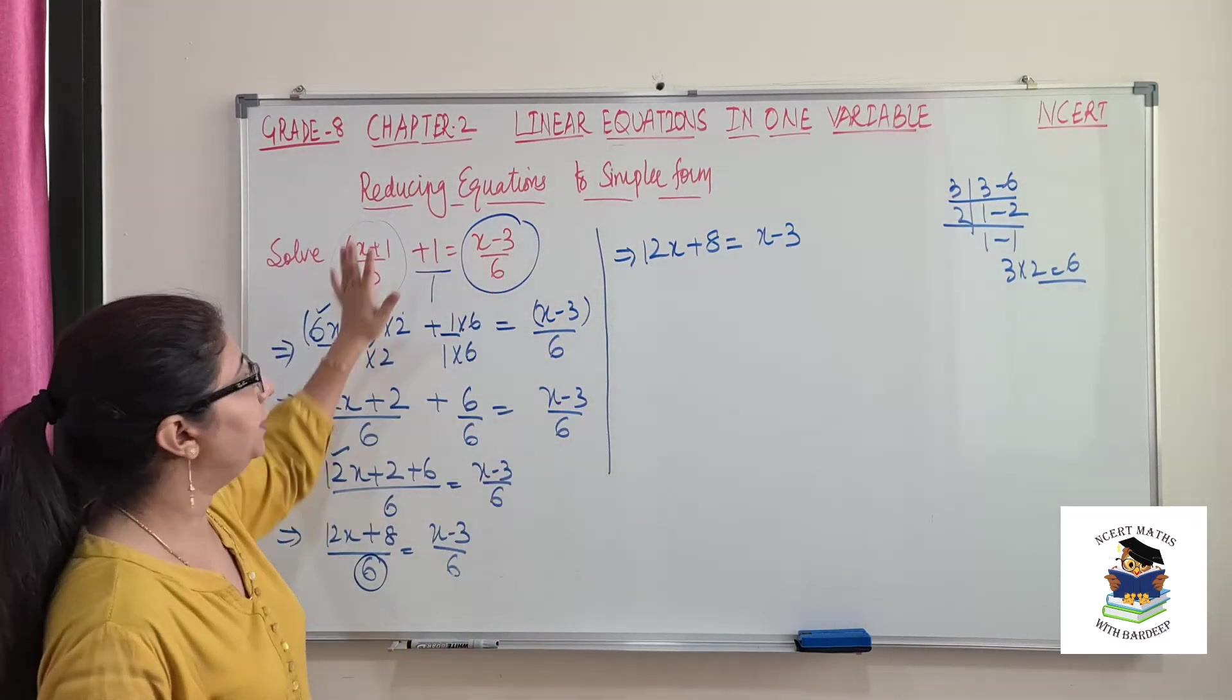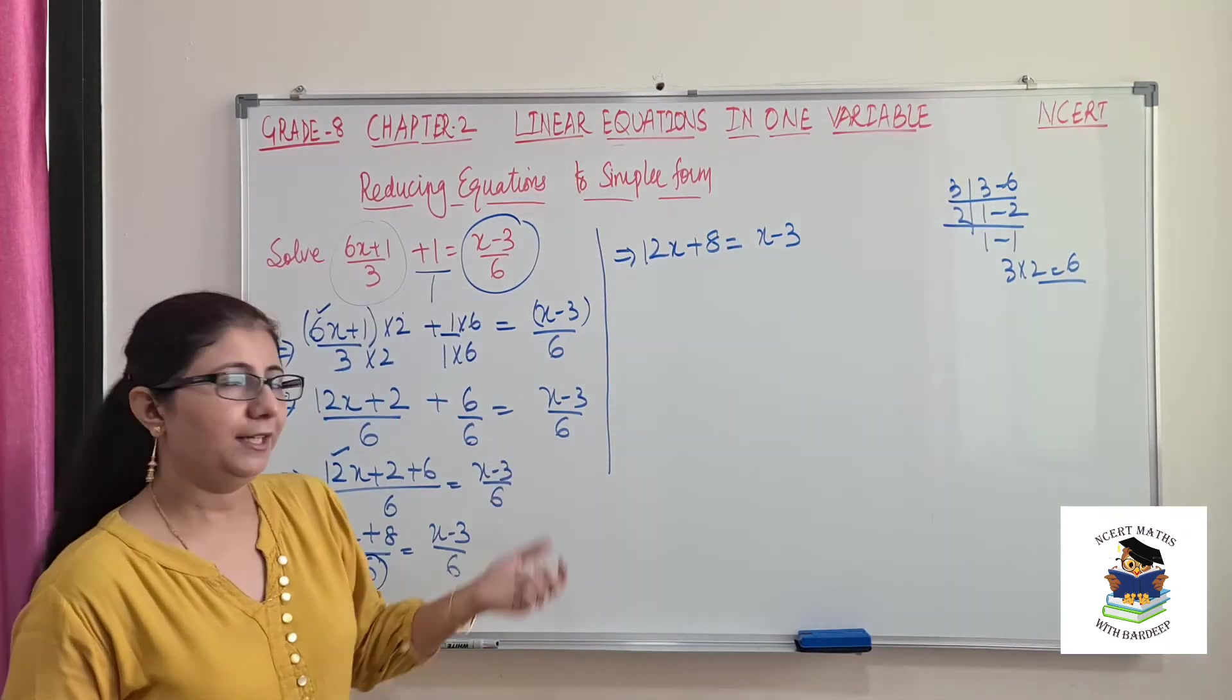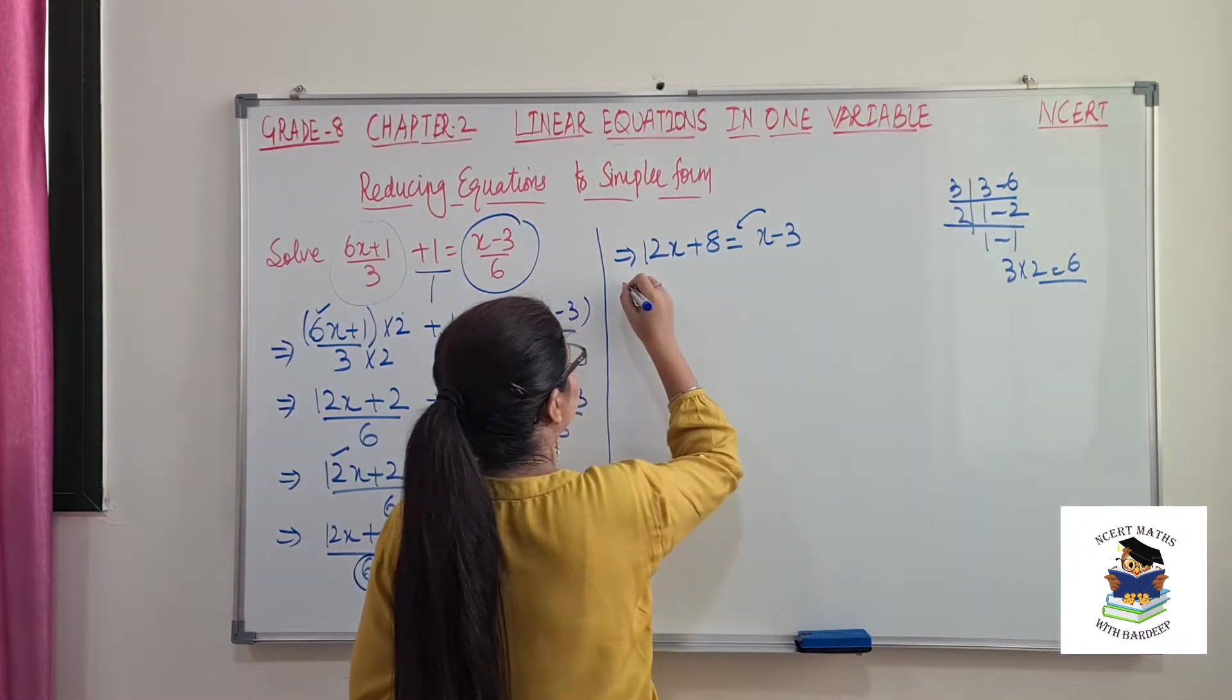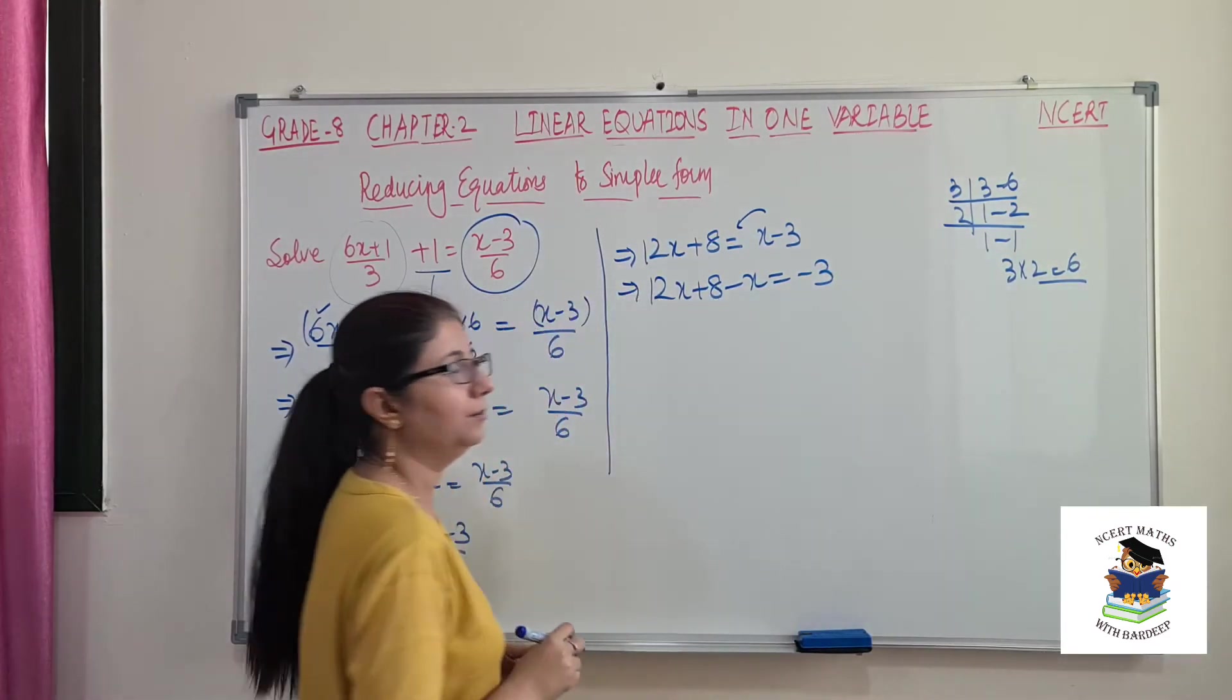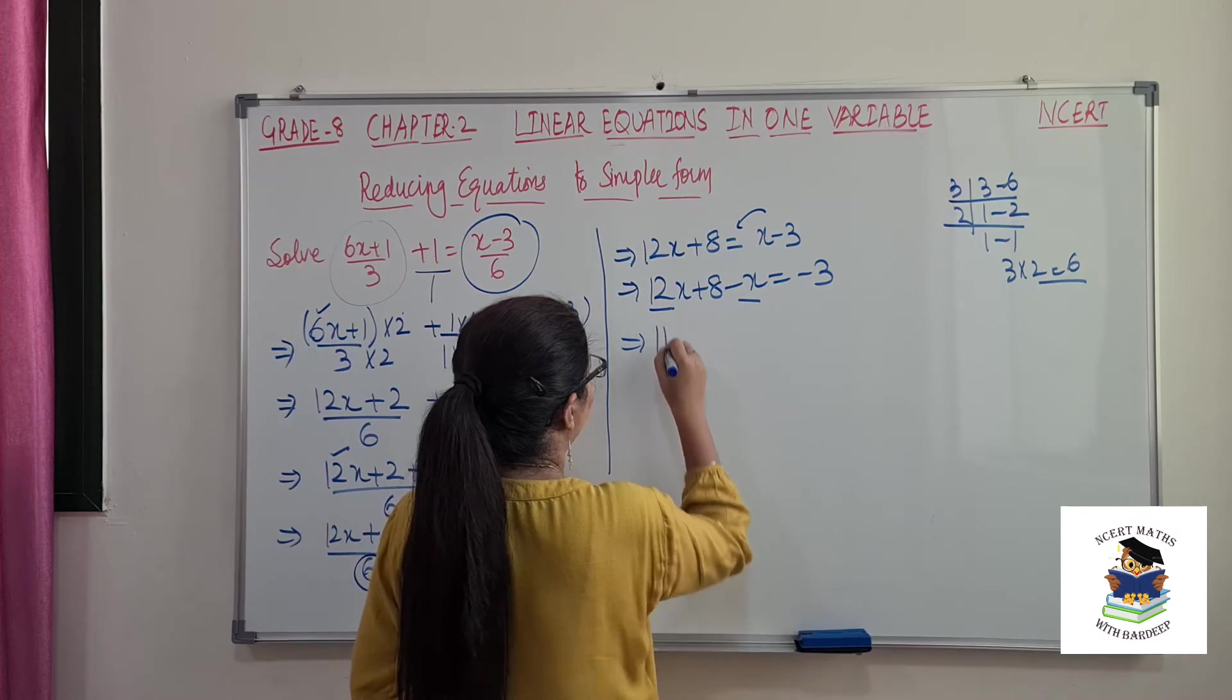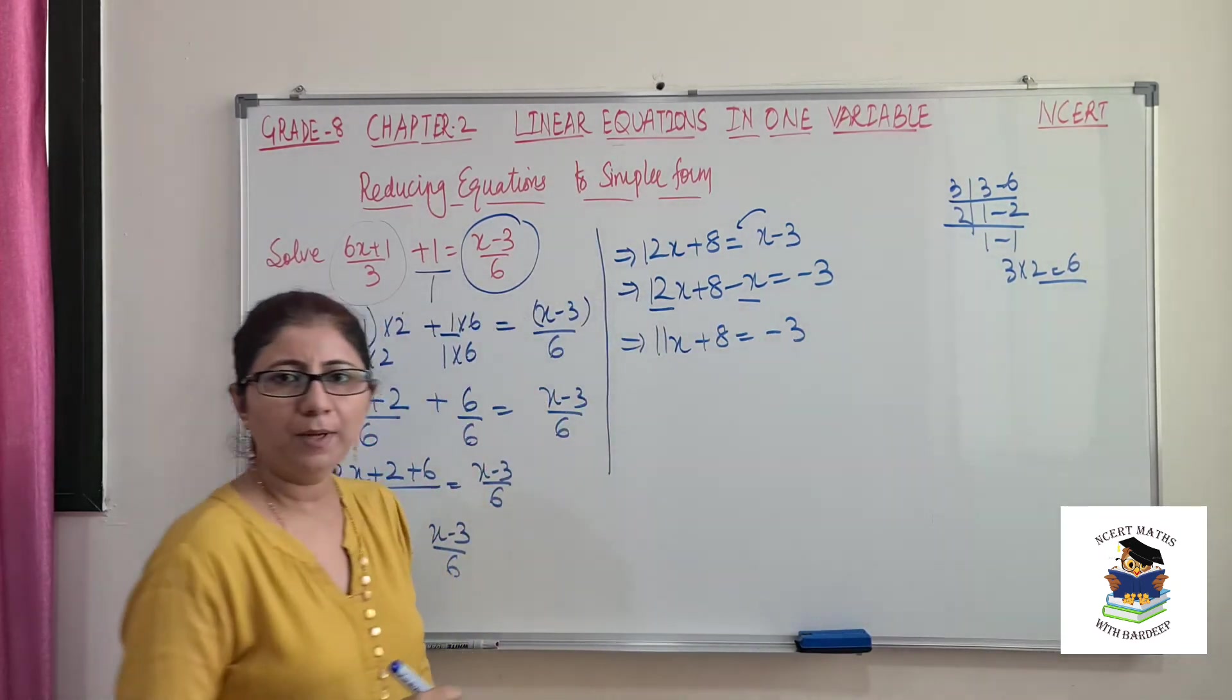So this is how we say reducing equations to simpler form. So we have reduced this complicated equation to simple linear form. And from here, I guess you already know how to solve this. So this x will be shifted here. So 12x + 8 - x = -3. So 12x - x is 11x + 8 = -3.